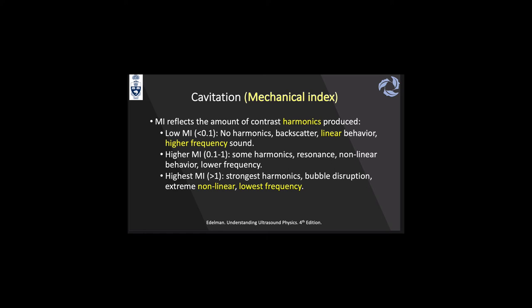The mechanical index reflects the amount of contrast harmonics produced. At low MI (below 0.1), there are no harmonics — just packet scatter with linear bubble behavior, associated with higher frequency probes such as those used for central lines. At higher MI (up to 1), there are some harmonic effects, some resonance, and non-linear behavior — related to lower frequency probes between 3 and 5 MHz. At the highest MI (above 1), using probes below 2–3 MHz, you get the strongest harmonics, bubble disruption, and extreme nonlinear behavior of the bubbles.